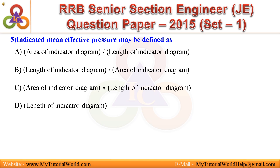Question 5: Indicated mean effective pressure may be defined as — a. Area of indicator diagram / Length of indicator diagram, b. Length of indicator diagram / Area of indicator diagram, c. Area of indicator diagram × Length of indicator diagram, d. Length of indicator diagram. Answer is: Area of indicator diagram / Length of indicator diagram.